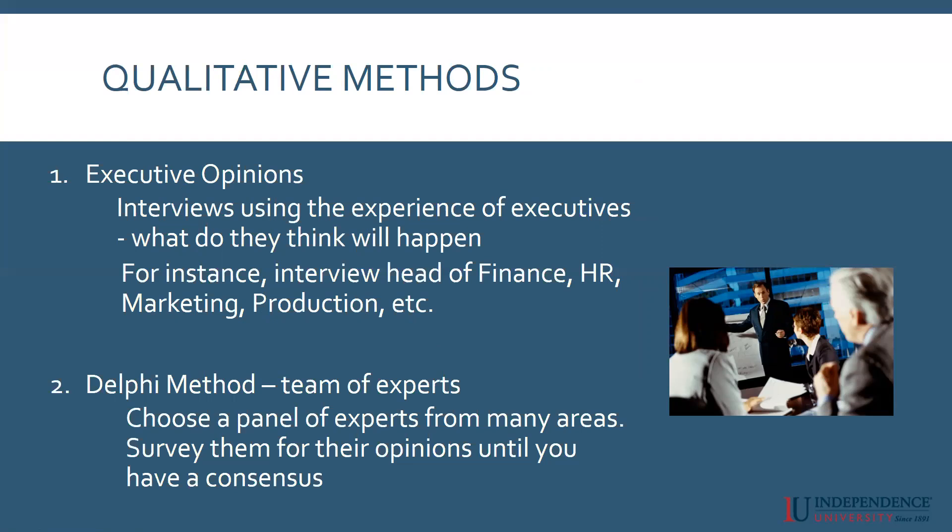The second method is called the Delphi method. You choose a panel of experts from many areas, and most of these experts are not going to be working at your company. You send them a survey about their opinion, they answer it, and you keep doing that back and forth — through surveys, interviews, or phone calls — until you have a consensus about what they think is going to happen in the economy, finance, production, or technology. That helps you create your forecast.